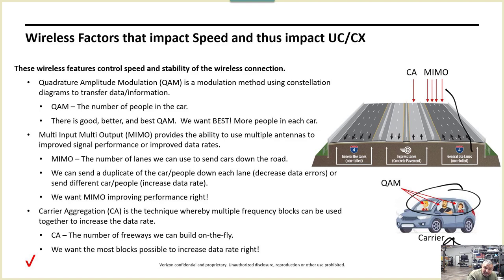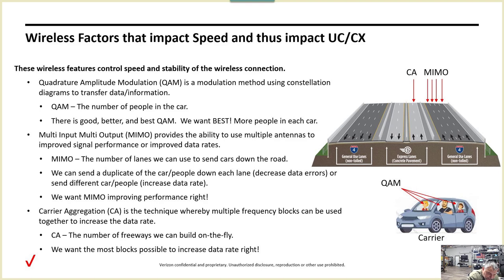There's also MIMO — multiple input, multiple output. It provides the ability to use multiple antennas. Most higher-category FWA routers are going to have at least four-by-four MIMO. In our analogy, MIMO is the lanes. We have a freeway with multiple lanes, so think of each MIMO lane as a lane on the freeway. What's really cool about MIMO is we can put a different car on each lane.